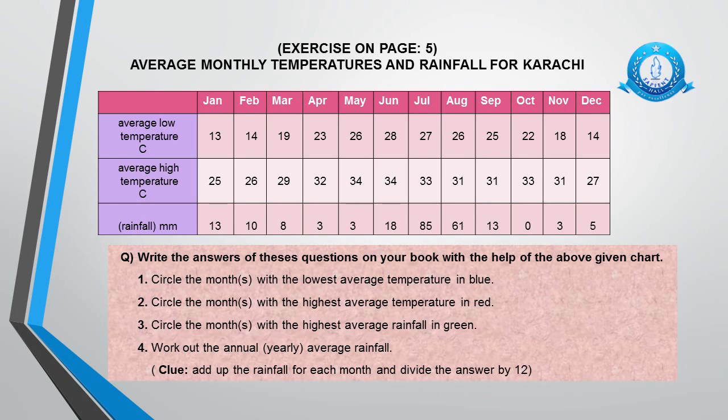The second row shows average high temperature: January 25°C, February 26°C, March 29°C, April 32°C, May 34°C, June 34°C, July 33°C, and it continues in the same way. The last row shows rainfall: January 13mm, February 10mm, March 8mm, April 3mm, May 3mm, June 18mm, July 85mm, August 61mm, and it continues like this till December.